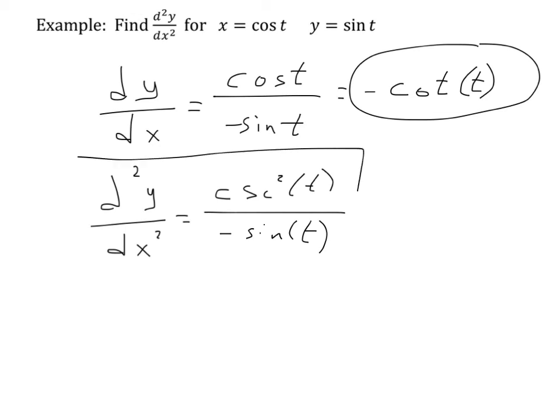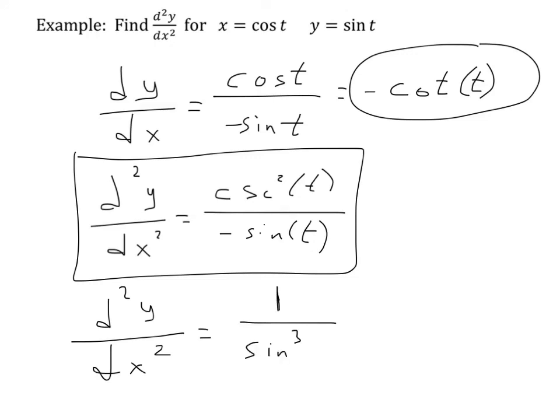And, we could try, we could leave the answer here. We could try and beautify this a little bit by putting it in terms of sine and cosine and things like that. So, d squared y dx squared. Let's see here, cosecant squared is 1 over sine squared. Oh, yeah, so this will actually end up being 1 over sine cubed t.